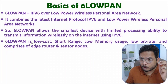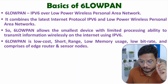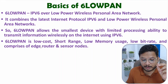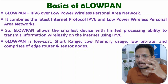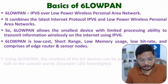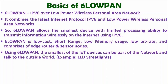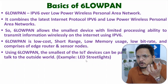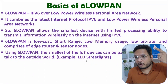6LoWPAN is a low-cost protocol used for short range, with very low memory usage and data transfer happening at a low bit rate. It comprises edge routers and sensor nodes. Using 6LoWPAN, the smallest IoT devices can be part of the network and communicate with the outside world — for example, LED street lights can communicate on the internet using 6LoWPAN.